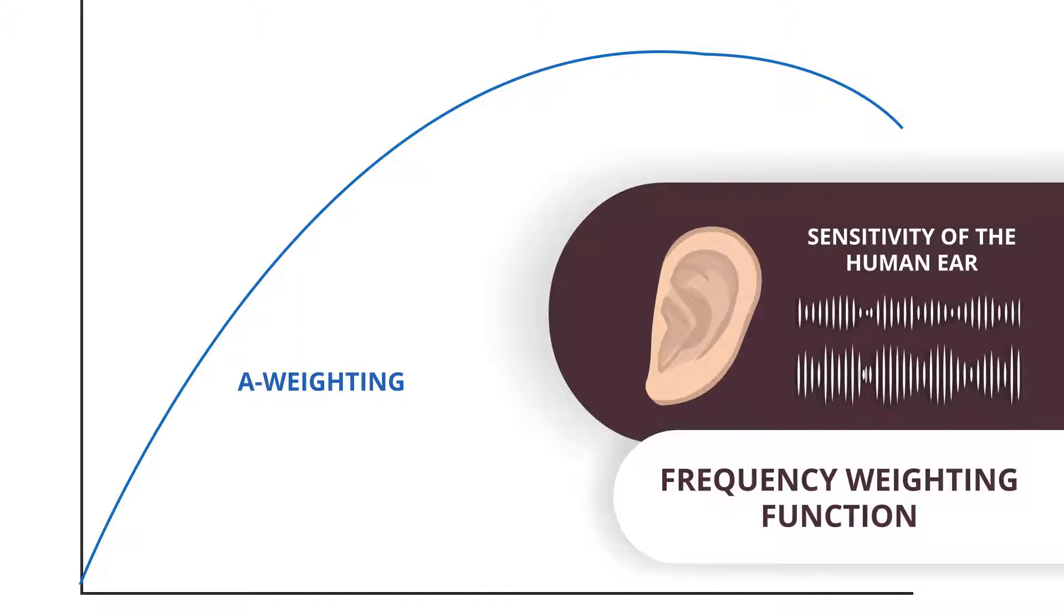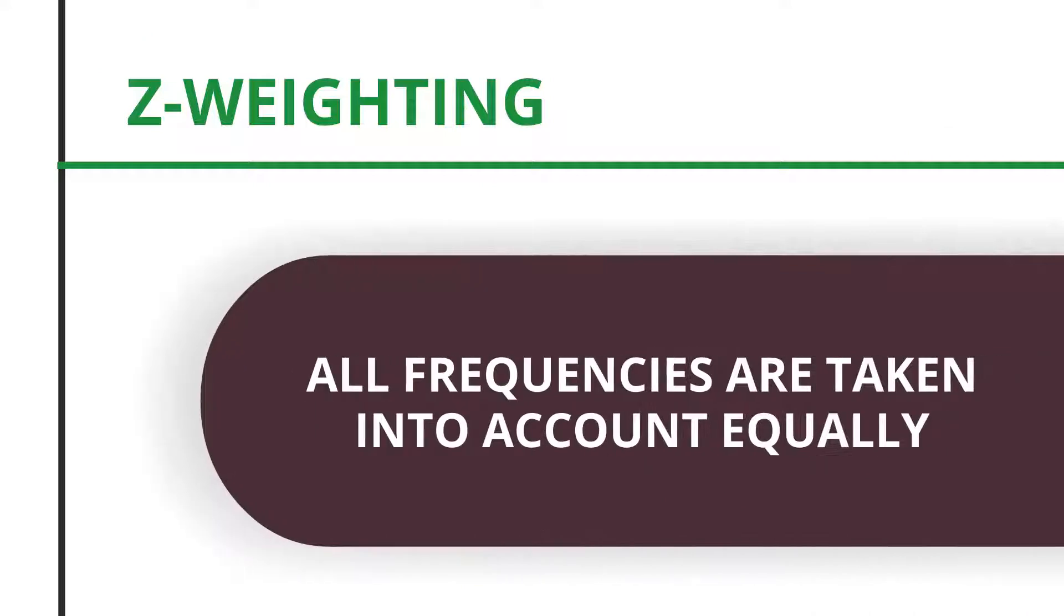Other frequency weightings are C and Z. Z weighting means that all frequencies are taken into account equally.